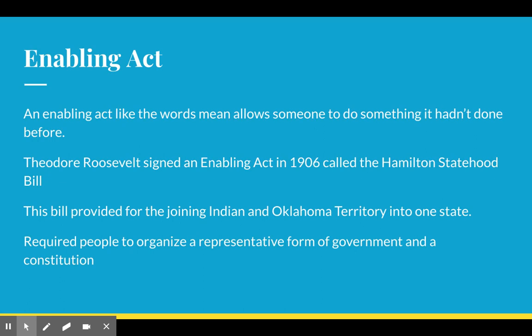The Enabling Act is going to require them to organize together, combined, a representative form of government and a constitution. That representative form of government has a state senate, state house, and a governor, and sends members to Congress.